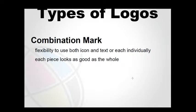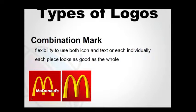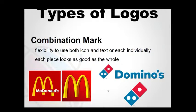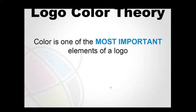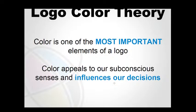Then there is the combination mark — flexibility to use both an icon and text, or each individually, where each piece looks as good as the whole. McDonald's logo uses both the M mark and the type. Domino's uses a name and a symbol. You can combine them. Color is one of the most important elements of the logo — it appeals to our subconscious sense and influences our decisions.